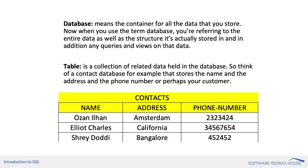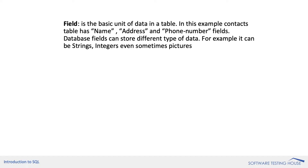A table is a collection of related data held in the database. Think of a contact database, for example, that stores the name, address, and phone number of your customers. We have a contact table used to store contacts data. Microsoft SQL Server is ideal for storing structured data that can be organized neatly in rows and columns. A field is the basic unit of data in a table. In this example, the contacts table has name, address, and phone number fields. Database fields can store different types of data — for example, strings, integers, or even pictures.